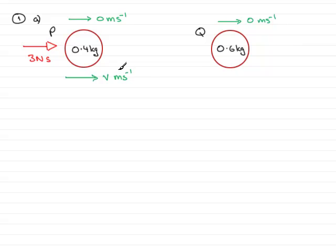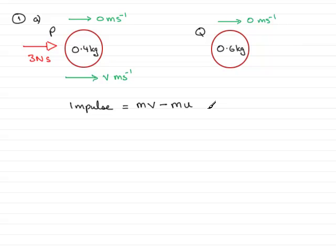To calculate V, I'm going to use the impulse equation. An impulse, just as a reminder, is equal to the change in momentum of an object. Momentum is mass times velocity, so the change in momentum is mass times final velocity minus mass times initial velocity. Impulse is a vector quantity, just like velocity, so we need to associate a plus direction — I'm going to take rightward as positive. That means my impulse of 3 Ns is in the plus direction, so that will be 3.